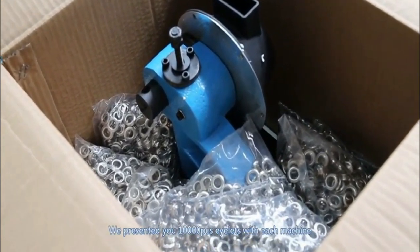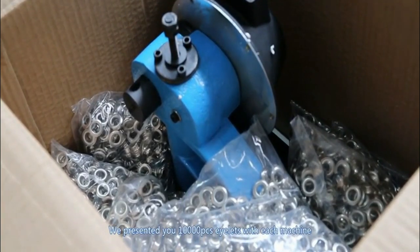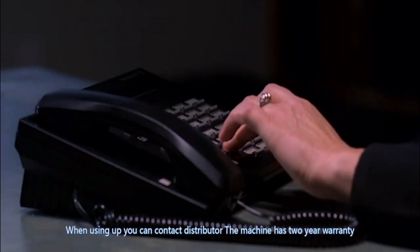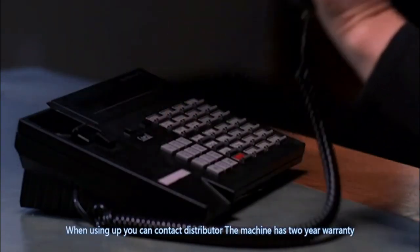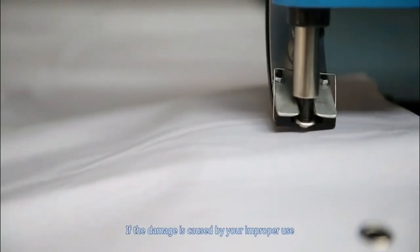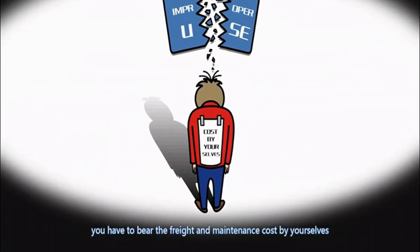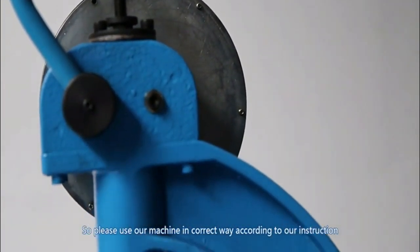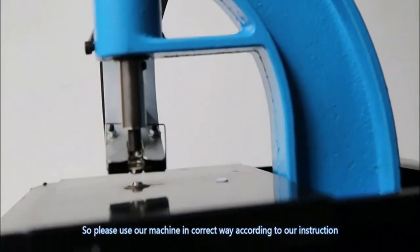About after sale. We presented you 10,000 pieces eyelets with each machine. When using up, you can contact distributor. The machine has two-year warranty. If the damage is caused by your improper use, you have to bear the freight and maintenance cost by yourselves. So please use our machine in correct way according to our instruction.